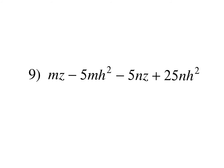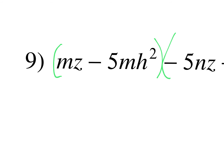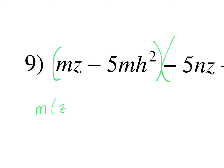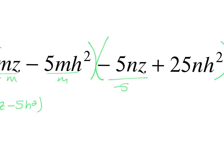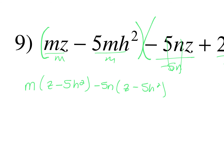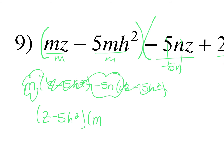Look at number 9. Don't be overwhelmed by all the letters — ask the same questions. Is there a GCF I can take out of all four terms? No. So group the first two and second two. In the first parentheses I can take out an m, leaving z minus 5h squared. In the second parentheses I take out negative 5n, and I'm left with z minus 5h squared. The parentheses are the same, so z minus 5h squared goes out front, written one time, and m minus 5n gets its own parentheses.